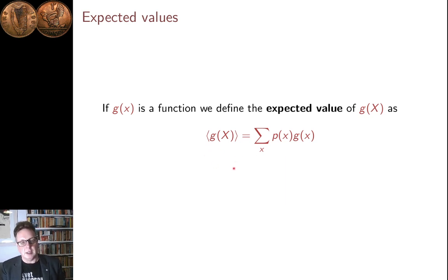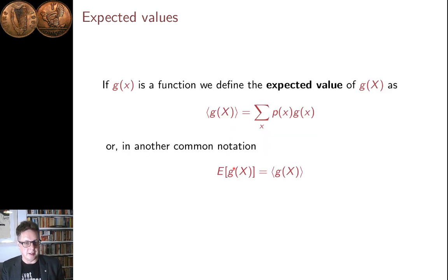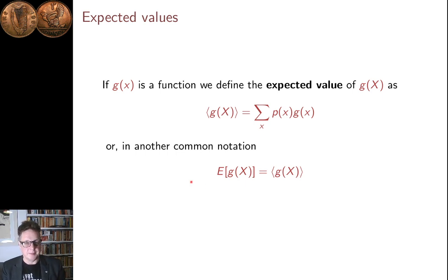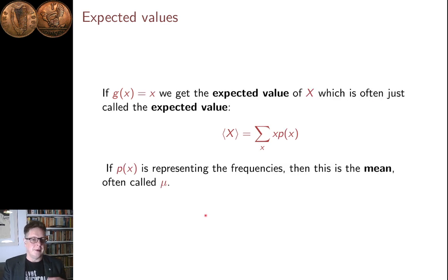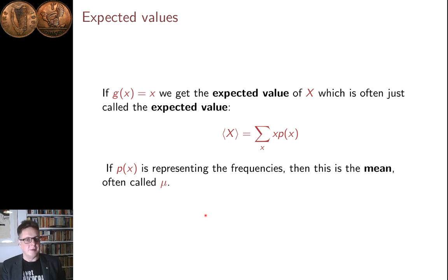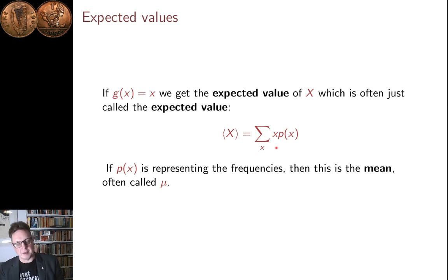These angle brackets are one of the two common notations for the expected value. The other common notation is to use a big E, standing for expected value — or possibly originally for the German for expected value. So these are two notations for the same thing. The expected value of X is just called the expected value: it is the sum over the possible values of the value multiplied by the probability of that value.